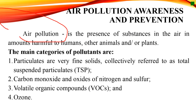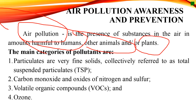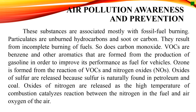Air pollution is the presence of substances in the air in amounts harmful to humans, animals, or plants. The main categories of pollutants are particulates, or very fine solids collectively referred to as total suspended particles or TSP; carbon monoxide; oxides of nitrogen and sulfur; volatile organic compounds or VOCs; and ozone. These substances are associated mostly with fossil fuel burning. Particulates are unburned hydrocarbons and soot or carbon, resulting from incomplete burning of fuels. Carbon monoxide and VOCs such as benzene and other aromatics are formed from the production of gasoline to improve its performance as fuel for vehicles.